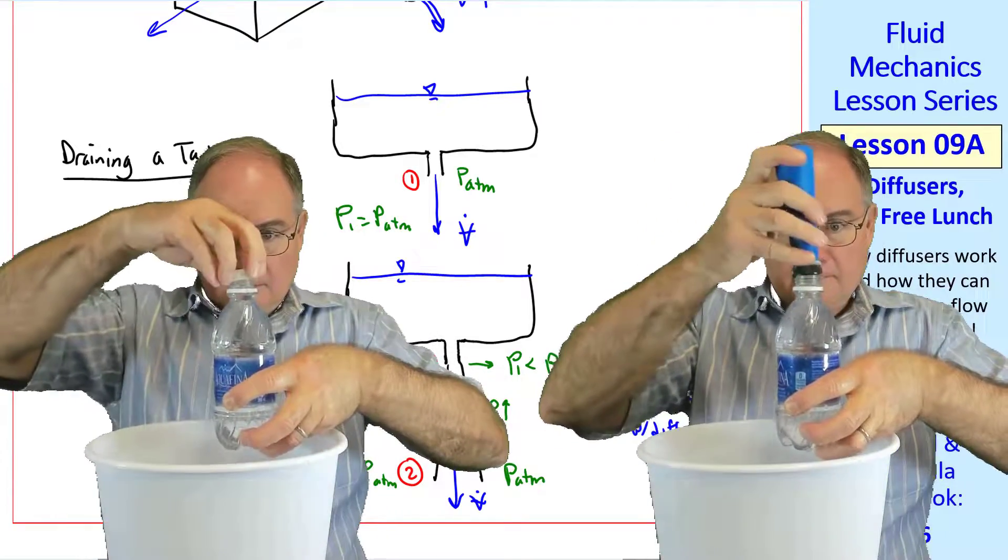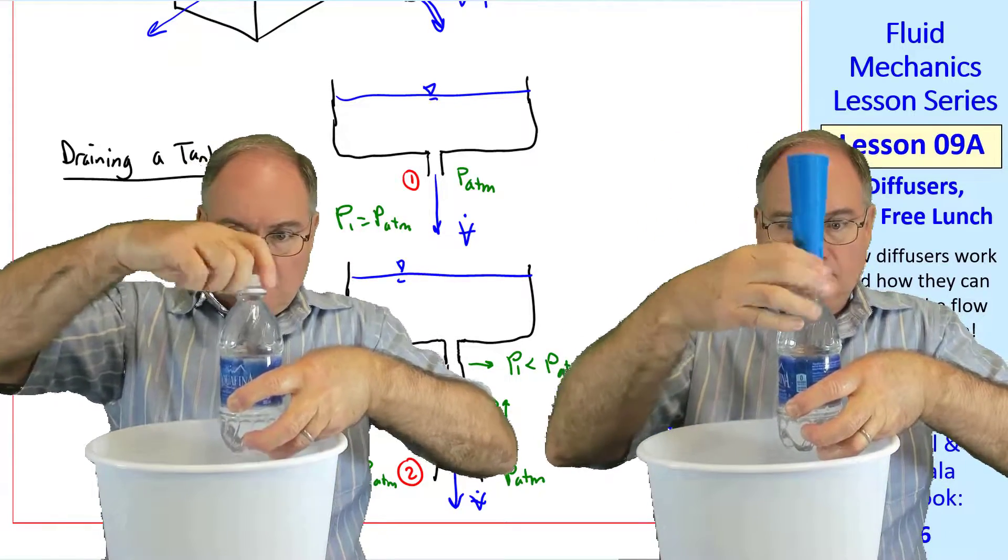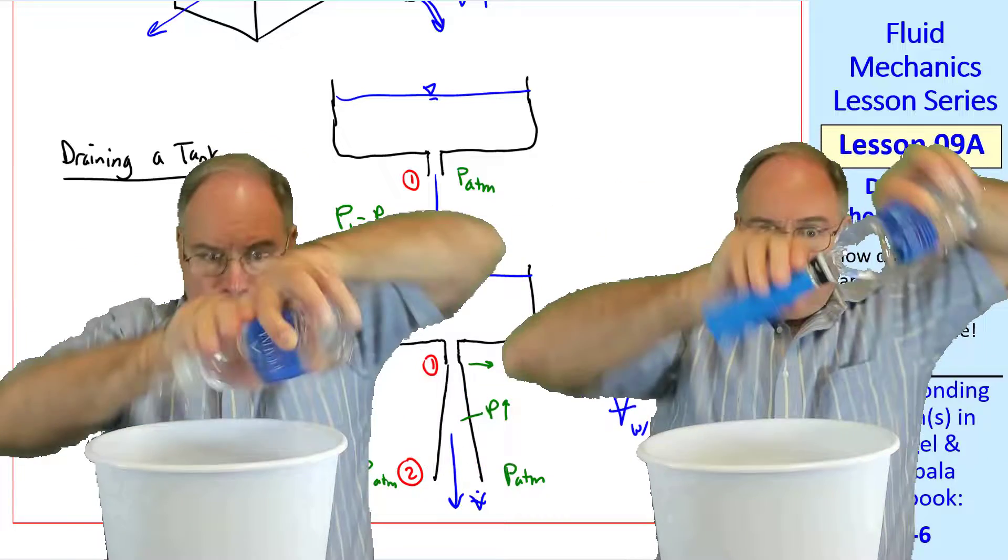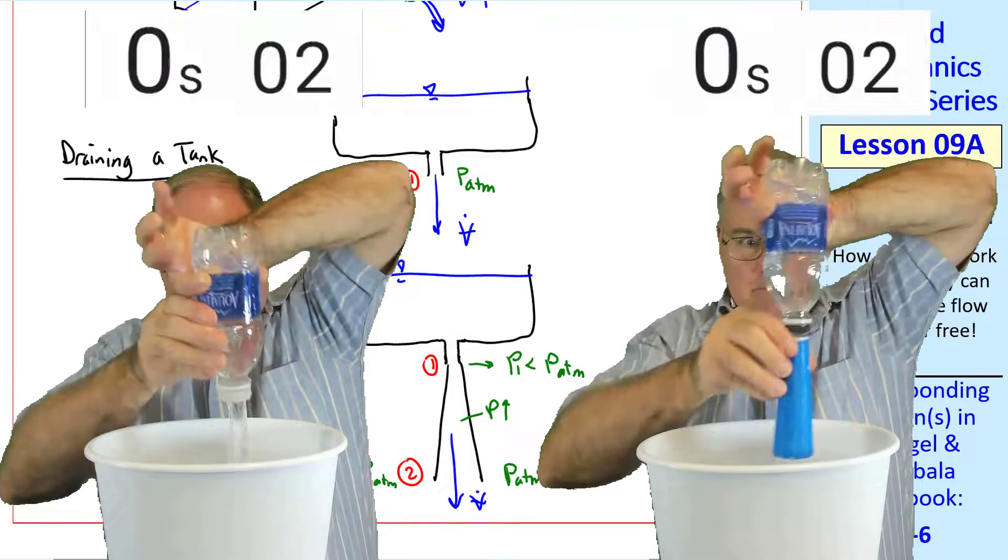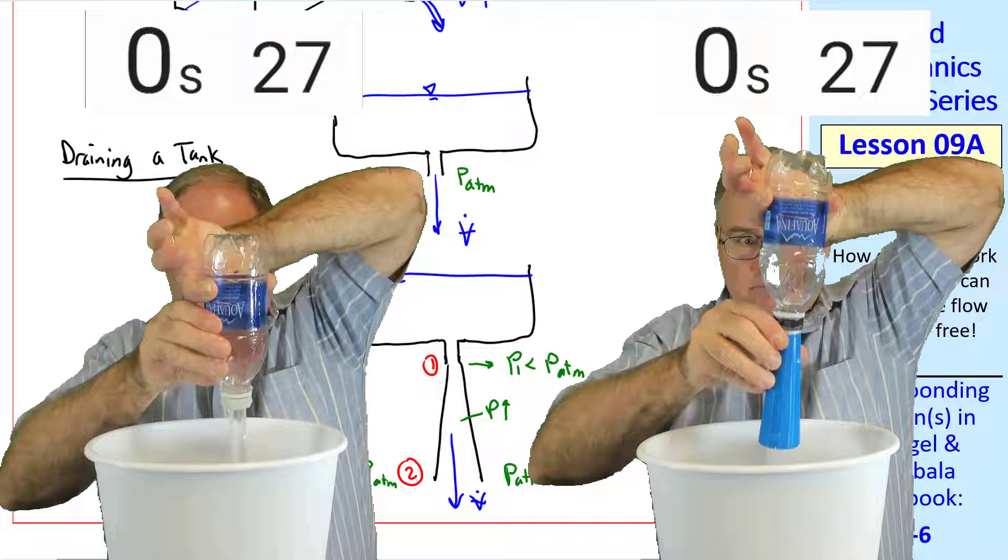I have two identical lids, one with a diffuser attached. I screw them on the bottle and turn them over. I start the timer when I release my finger from the little hole at the top.